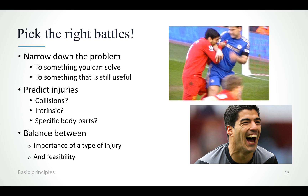Looking at a picture of Suarez biting a player — would we care about predicting this type of injury or not? It becomes quite apparent that some injuries are easier to predict than others. For example, you can't really predict whether two players are going to collide on pitch, but you can actually predict — or at least it sounds plausible — if a player is getting overtrained. In the end, you need to find the right balance between the importance an injury has both for the player and the club, and the feasibility of the problem.